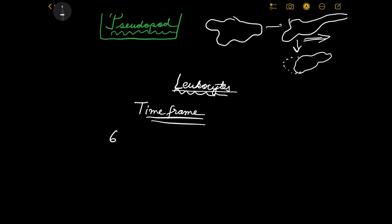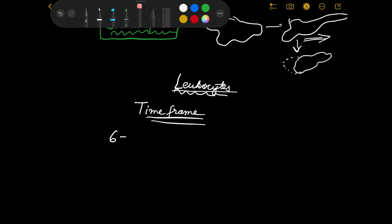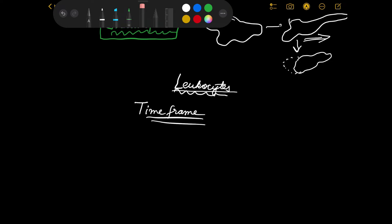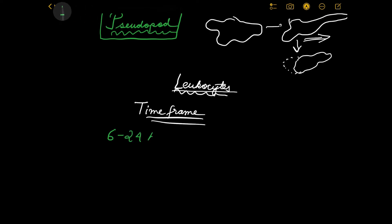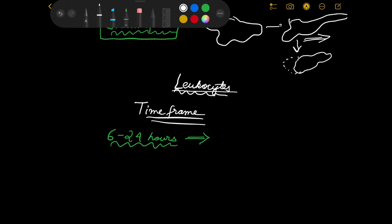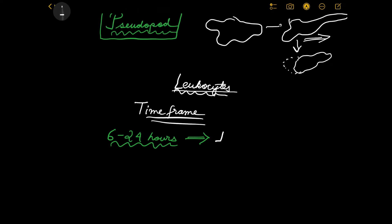Within six to 24 hours of infiltration by microbes, the leukocytes that predominate at the inflammation site - predominantly moving toward the infection source - happen to be neutrophils. However, if you're talking a little later, for example 24 to 48 hours, then a different picture emerges: monocytes will be the white blood cells predominantly found at the inflammation site.